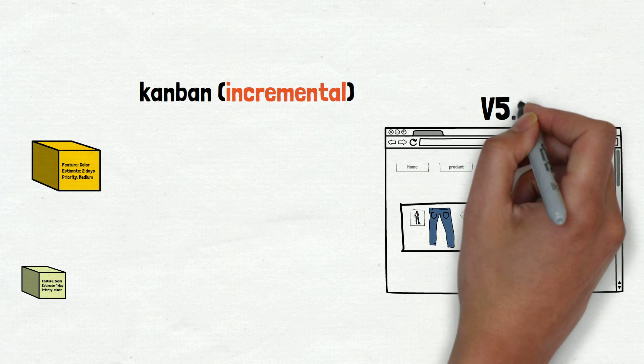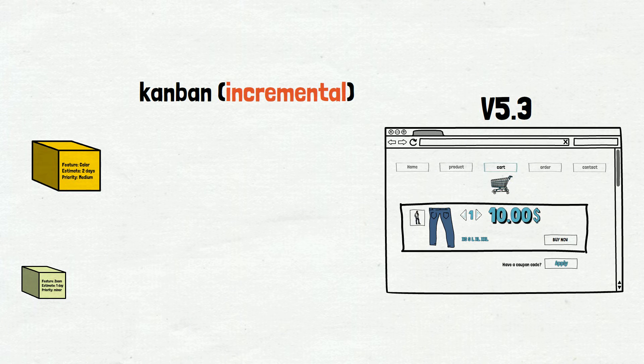Incremental development focuses on two things. First, a working version of the product with minimum viable functionality is available to users. Second, instead of developing all the features — which can take months — and releasing them all at once, the product is developed in small increments, one or more features at a time.